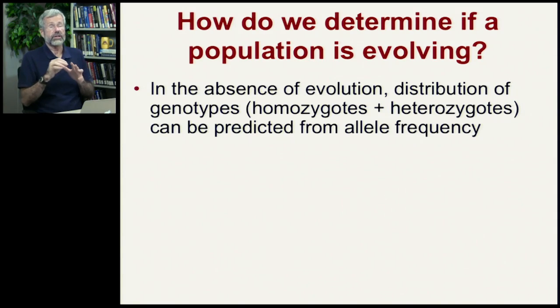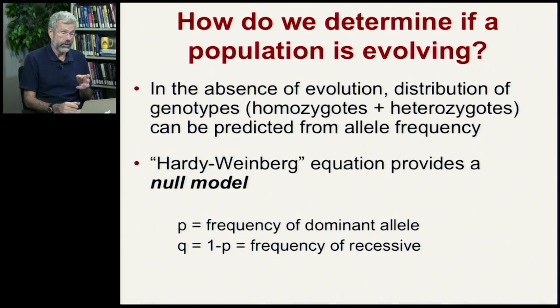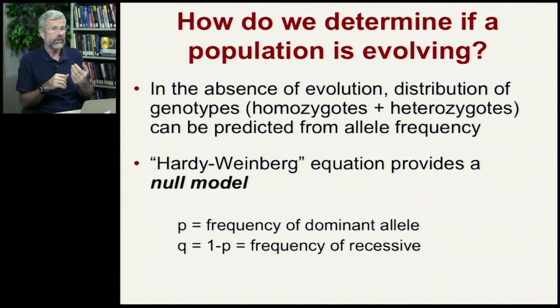In observing patterns in real populations, it's often a very important question to know if a population is actually currently evolving. And we can take this concept of genetic equilibrium versus disequilibrium or genetic change to make some very simple predictions. In the absence of any kind of evolution or evolutionary change, the distribution of genotypes, that is homozygotes of either the dominant or recessive or the heterozygotes, can be predicted from allele frequency. And this can be done through what's called the Hardy-Weinberg equation, which provides a null model or kind of a simplistic view of the way the world is in the absence of any kind of evolution at all. So we're going to be looking specifically at circumstances where there's nothing interesting going on. Gene frequency is going to stay the same from one generation to the next.